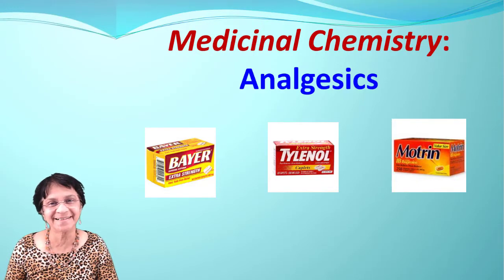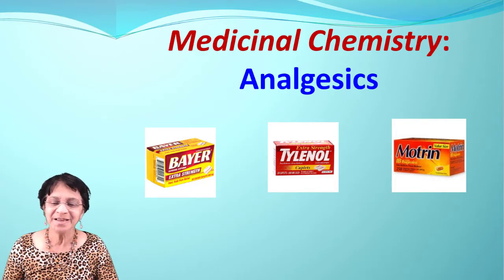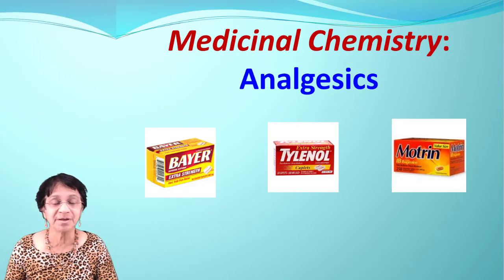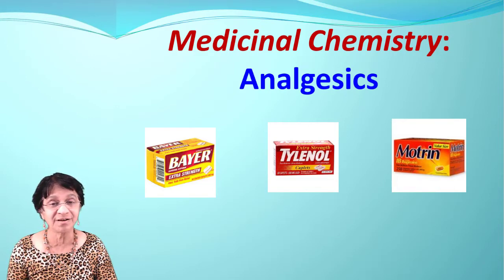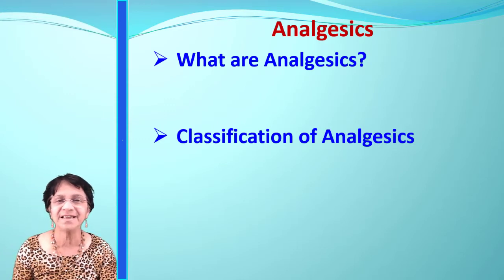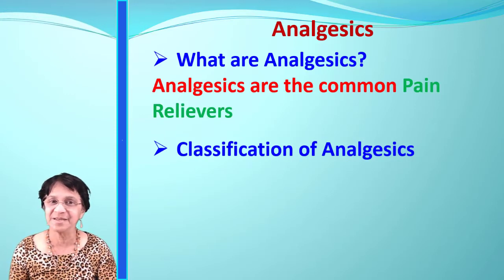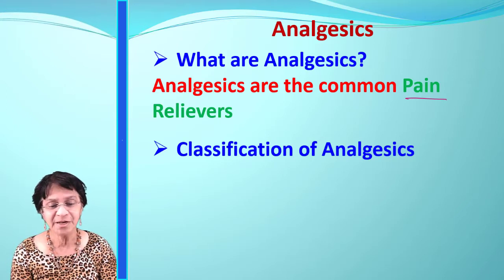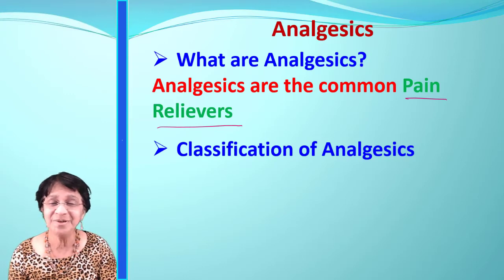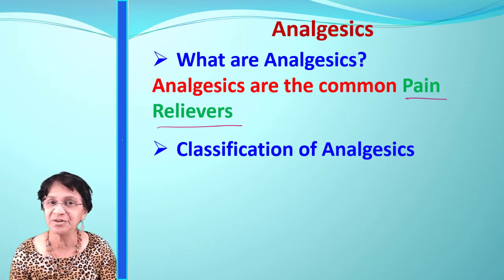In this video we're going to talk about analgesics — each one of you has definitely taken or thought of taking some analgesics at some point. Examples of over-the-counter analgesics include aspirin, Tylenol, and ibuprofen. The basic definition of analgesics is pain relievers. We sometimes cannot get rid of pain completely, but we can reduce it, so 'pain reliever' is a good way to define analgesics.